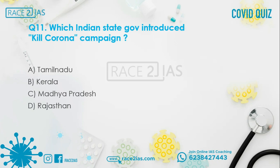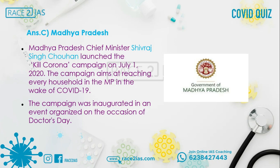Question number 11: Which Indian state government introduced the Kill Corona campaign? Option A: Tamil Nadu. Option B: Kerala. Option C: Madhya Pradesh. Option D: Rajasthan. The right answer is Option C, Madhya Pradesh. Madhya Pradesh Chief Minister Sivraj Singh Chauhan launched the Kill Corona campaign on July 1, 2020. The campaign aims at reaching every household in Madhya Pradesh in the wake of COVID-19 and was inaugurated on the occasion of Doctors' Day.